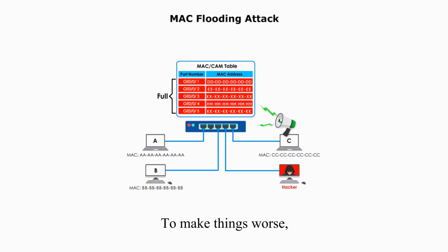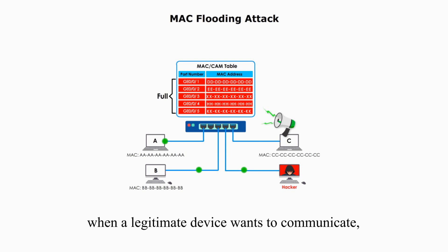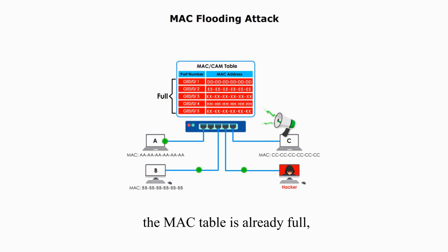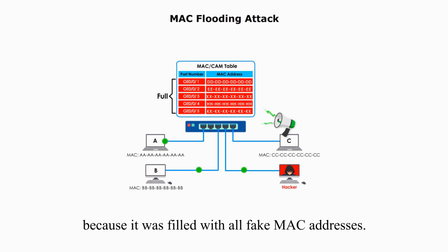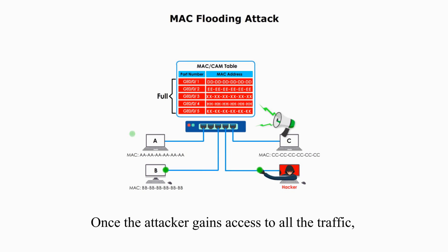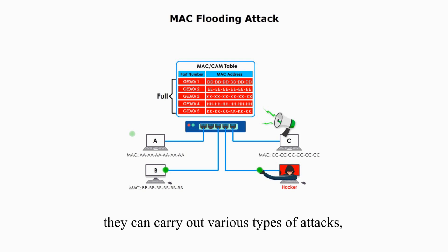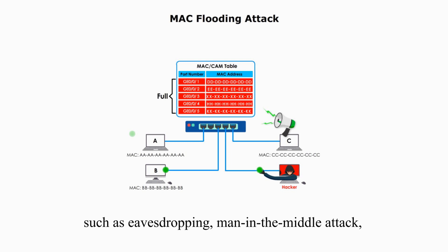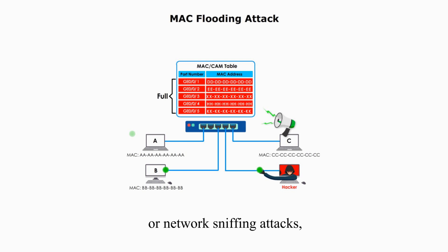To make things worse, when a legitimate device wants to communicate, the MAC table is already full because it was filled with fake MAC addresses. The switch has to broadcast any traffic to the whole network. Once the attacker gains access to all traffic, they can carry out various types of attacks, such as eavesdropping, man-in-the-middle attacks, or network sniffing attacks to steal sensitive information.